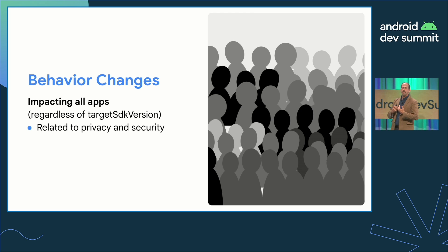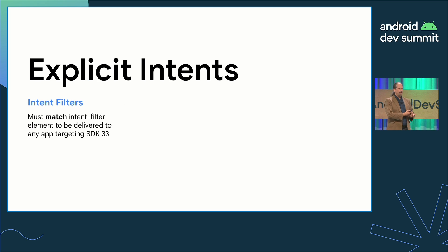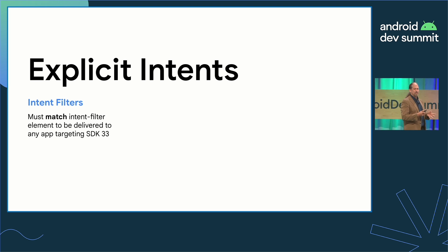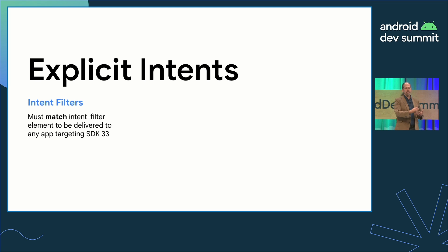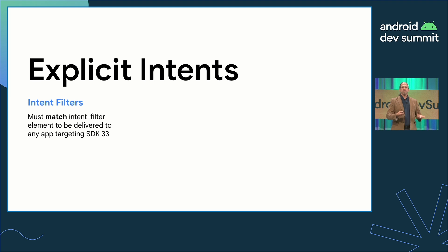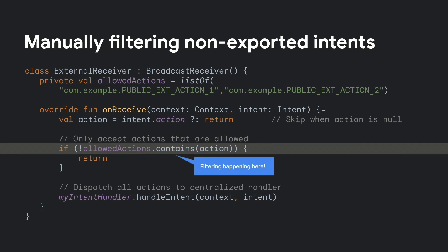We also have behavior changes related to privacy and security. We've locked down intent filters to behave more like they always should have. On Android 13, when your app sends an explicit intent to an exported component of another app targeting SDK 33 or higher, the intent is delivered only if it actually matches the intent filter element in the receiving app. If your app has been relying on this legacy behavior, you'll have to fix things. If your app has a centralized handler for both exported and non-exported intents, adding code to your receiver to filter out disallowed actions can prevent an external app from unexpectedly triggering internal code — and you should do this as soon as possible, even if you aren't ready to target SDK 33.